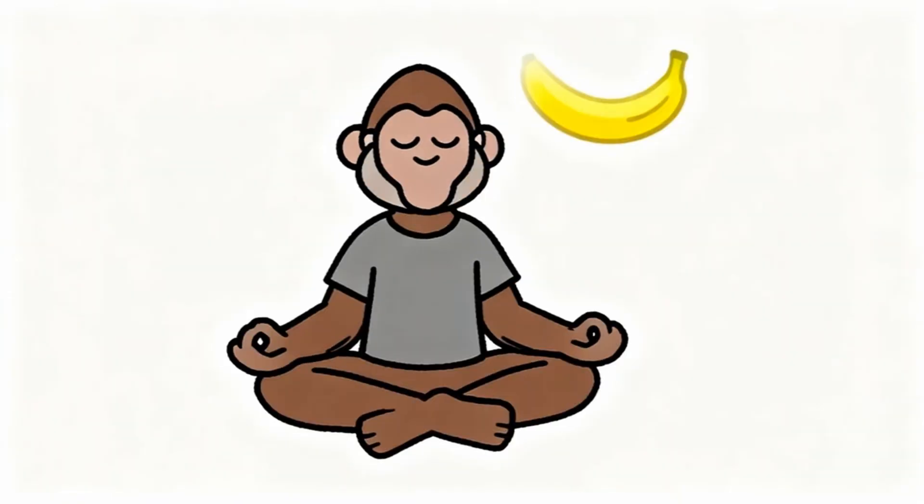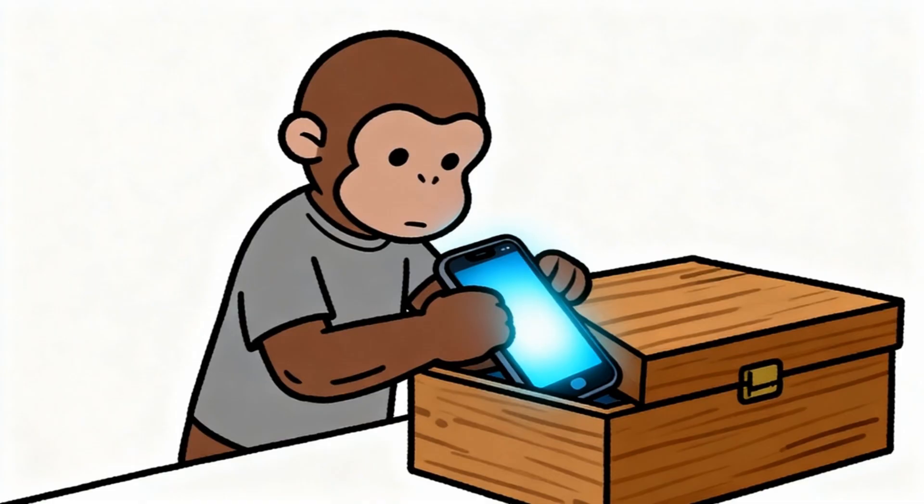The third strategy focuses on retraining attention span through deliberate practice. Monkey chooses single task and commits to focusing only on that task for specific amount of time. No switching between activities, no multitasking, no allowing mind to wander to artificial dopamine sources. This feels uncomfortable at first because scattered attention has become default mode. Meditation serves as attention training exercise where monkey practices observing thoughts without acting on them. When brain demands artificial dopamine banana, monkey notices the craving but does not satisfy it immediately. This builds mental muscle for resisting impulses and staying focused on chosen activities.